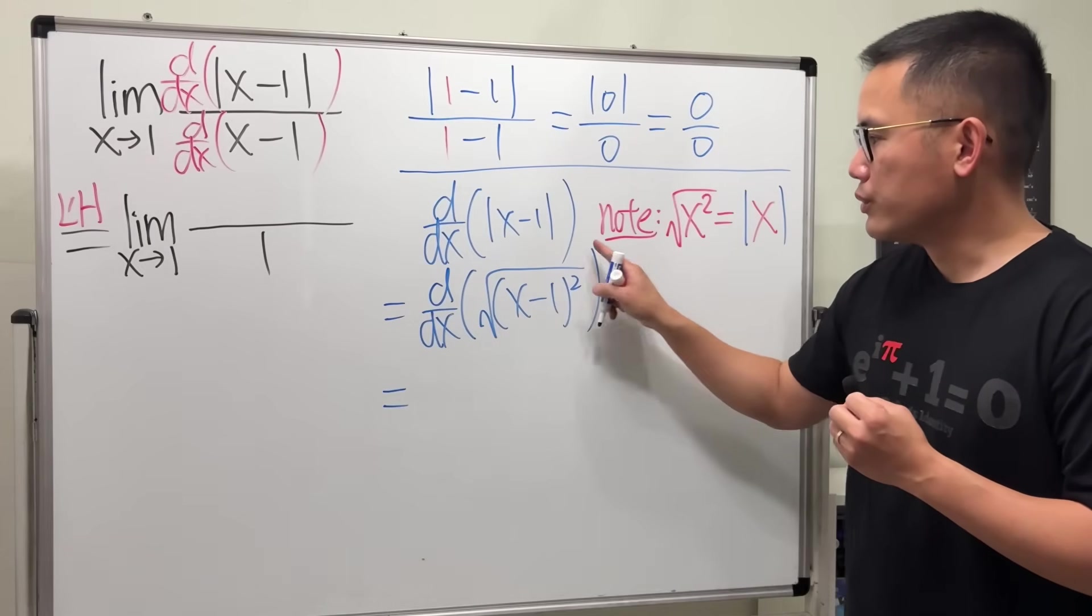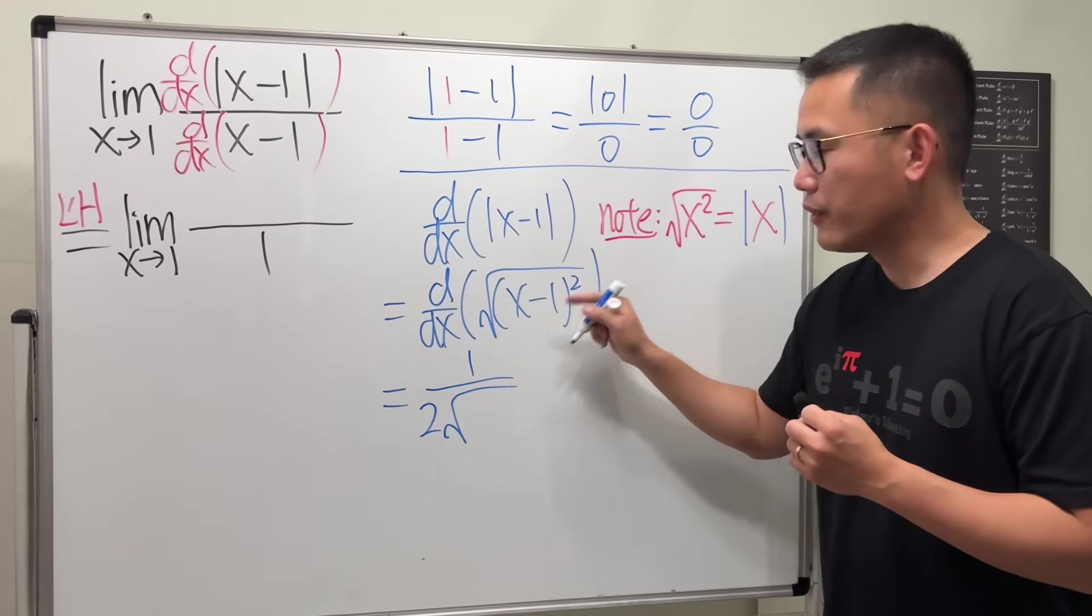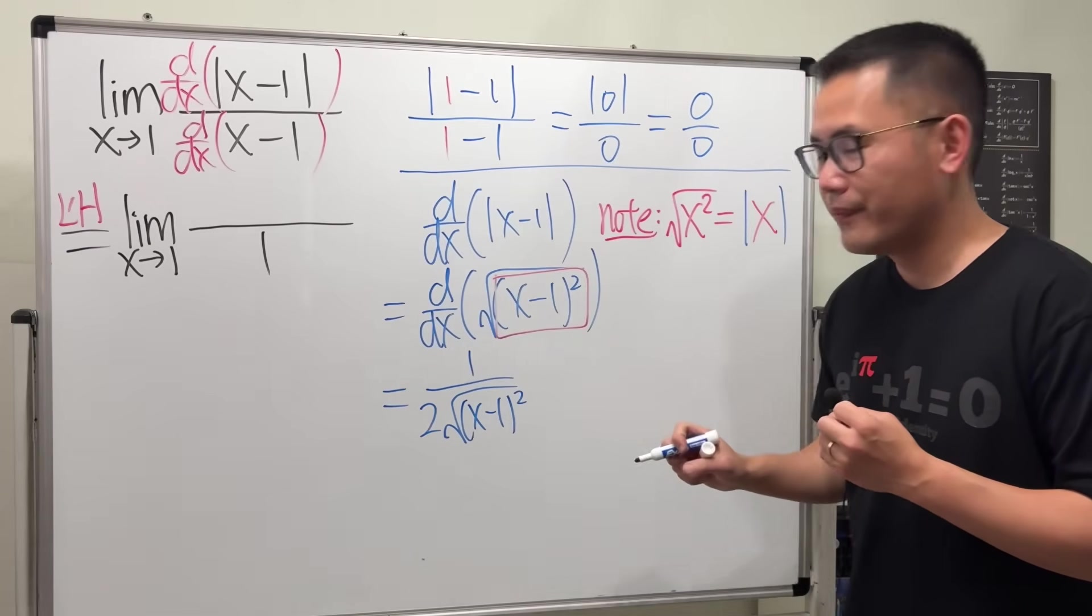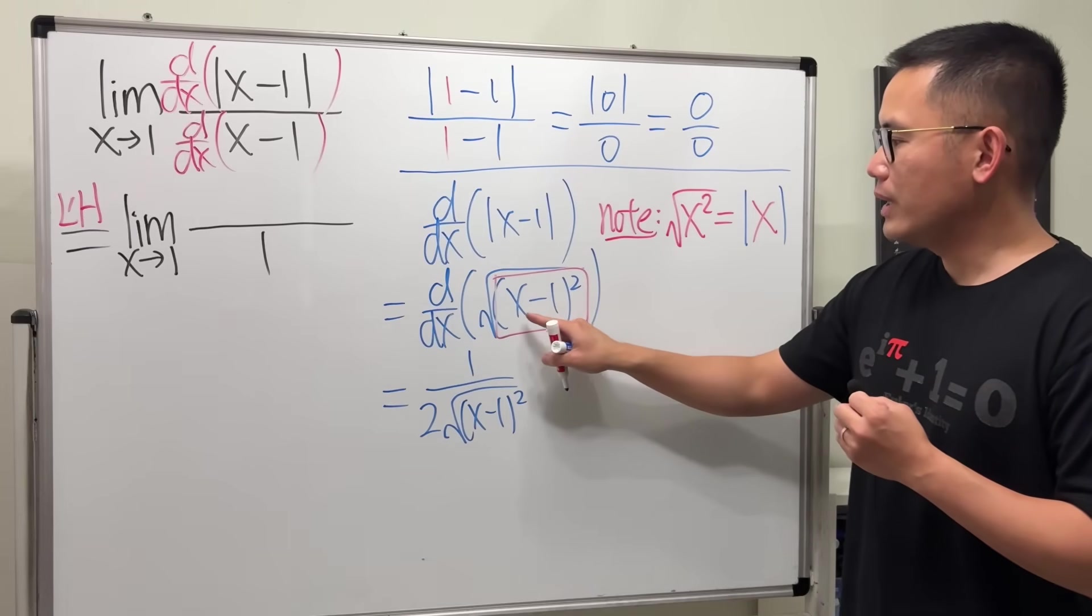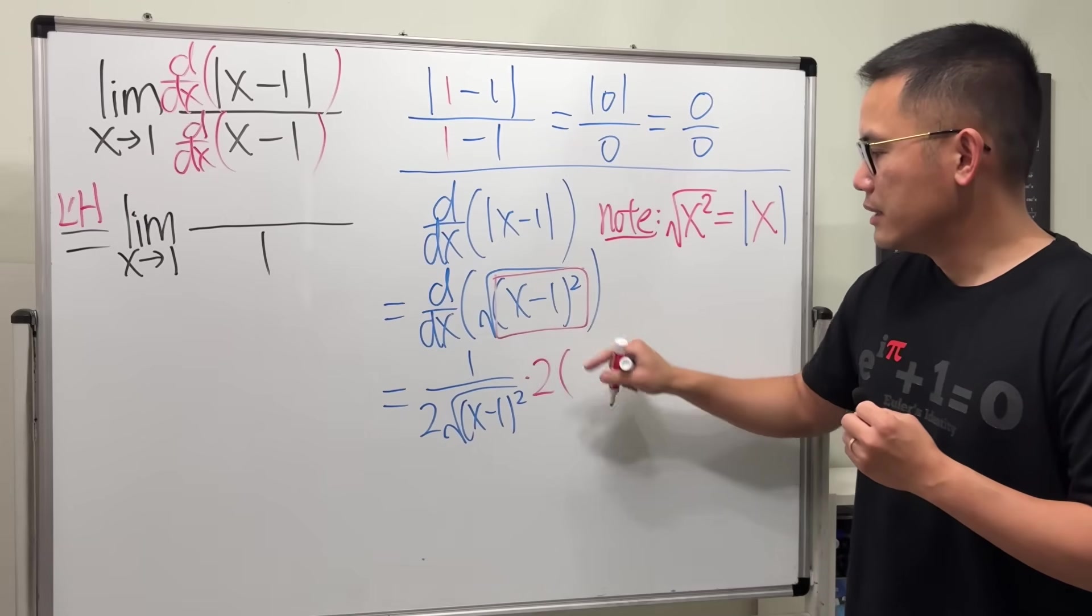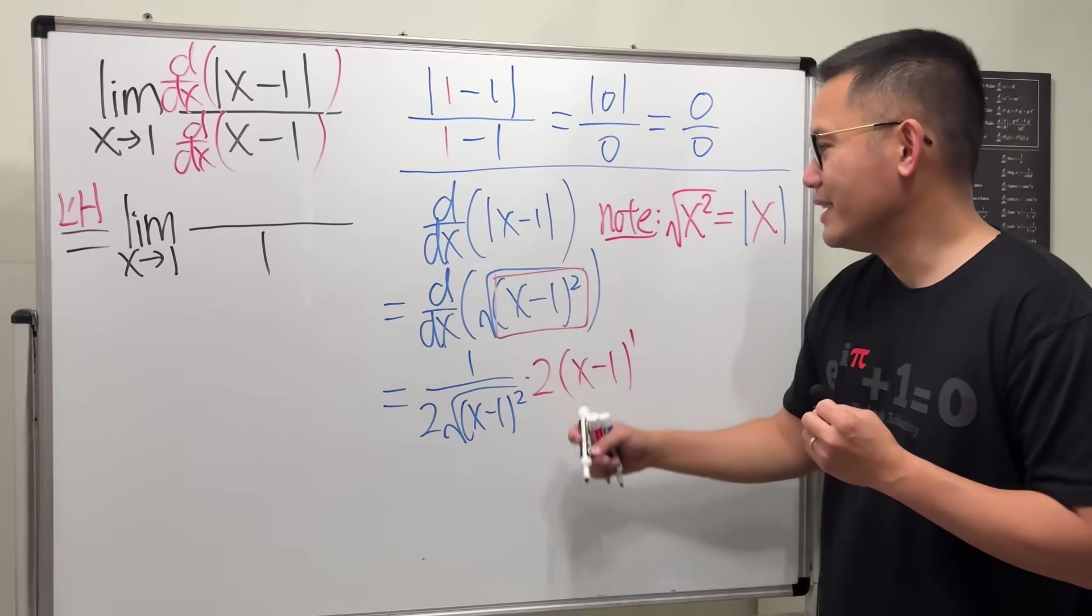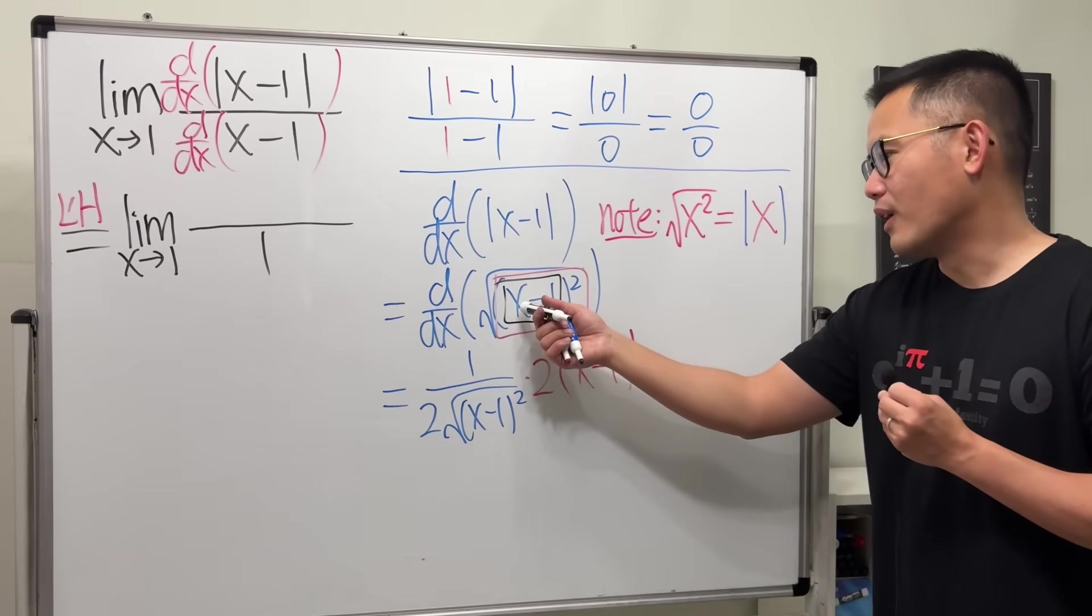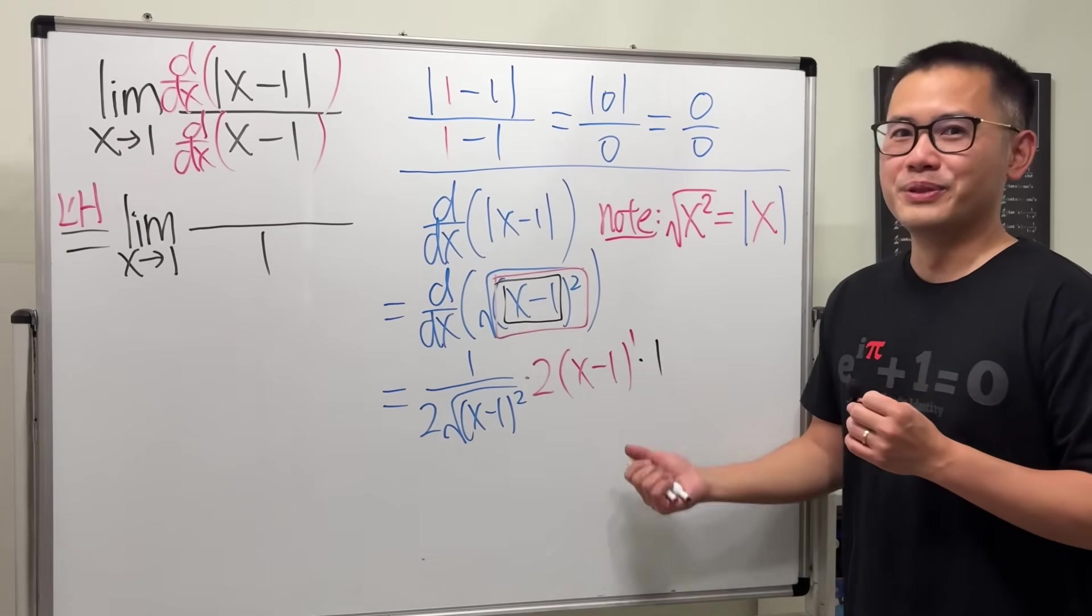Have a look. Taking the derivative of the square root, we get 1 over 2 square root of the inside, which is x minus 1 squared. And then don't forget to use the chain rule. The derivative of this, we have this to the second power. Put the 2 to the front first, times this raised to the first power. And then technically, we should also be looking at this and then do the chain rule again. But the derivative of x minus 1 is just 1. So if you forgot to do this, lucky you.